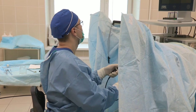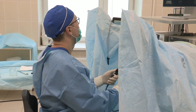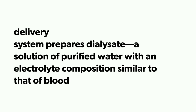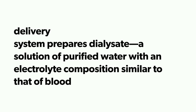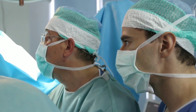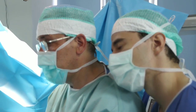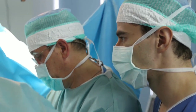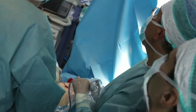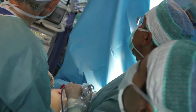Each hemodialysis system has its own monitor and control unit. The delivery system prepares dialysate — a solution of purified water with an electrolyte composition similar to that of blood — and delivers it to the dialyser. The external blood delivery system circulates a portion of the patient's blood through the dialyser and returns it to the patient. The dialyser is a disposable component in which solute exchange and clearance takes place.